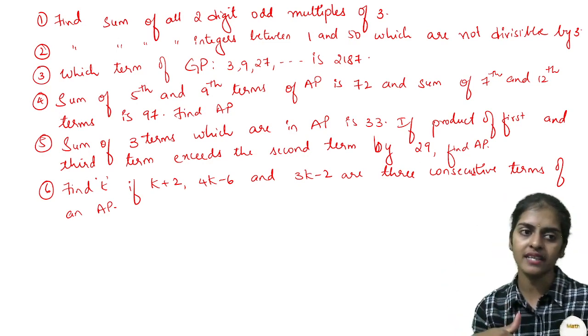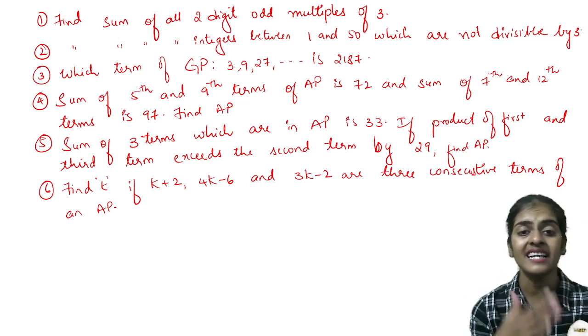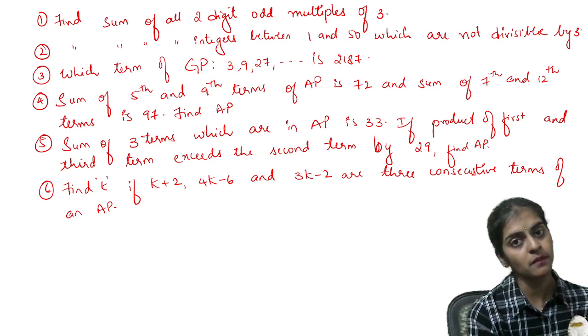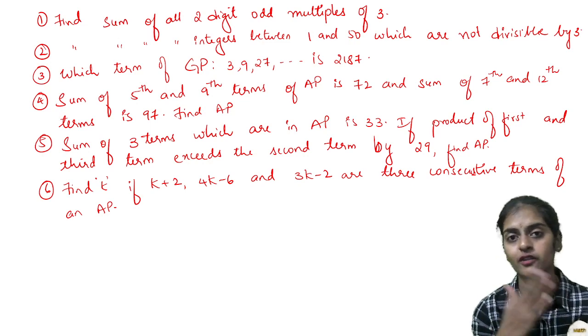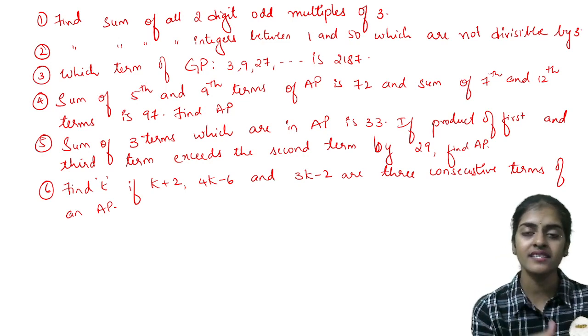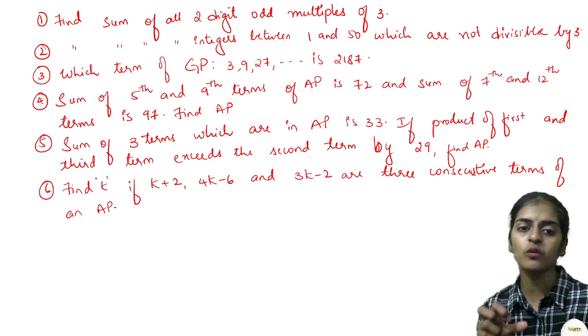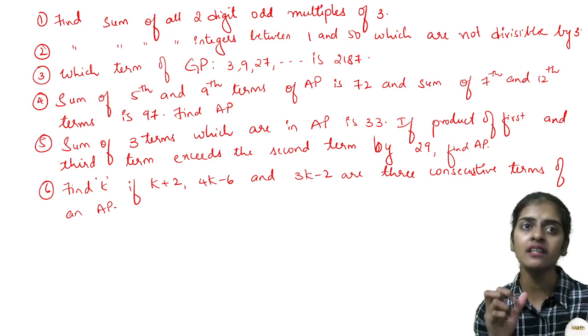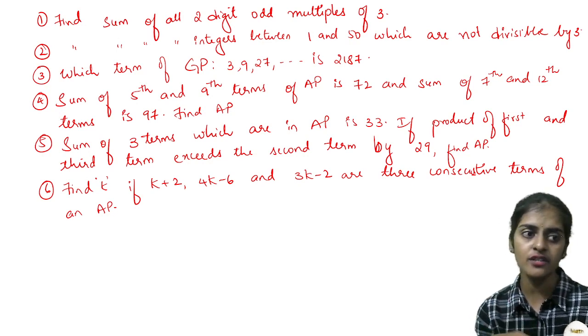But it's asking not divisible. Not divisible means first find the sum of 1 to 50 terms, then find the sum of terms which are divisible, subtract both of them. Then you will find the sum of numbers which are not divisible.